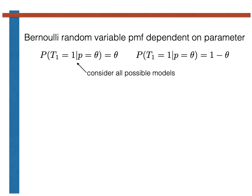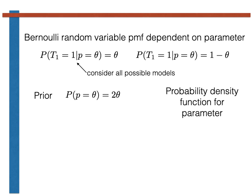To apply Bayes' theorem, we need to have some prior distribution that is a continuous function of this parameter. In the exercises, we are going to suppose that there is some reason to believe that success is more likely than failure, and we will assume that the prior distribution of the parameter theta is given by a simple function. This is a valid probability density because if we integrate between 0 and 1 — all the possible values a Bernoulli parameter can take — we get 1.